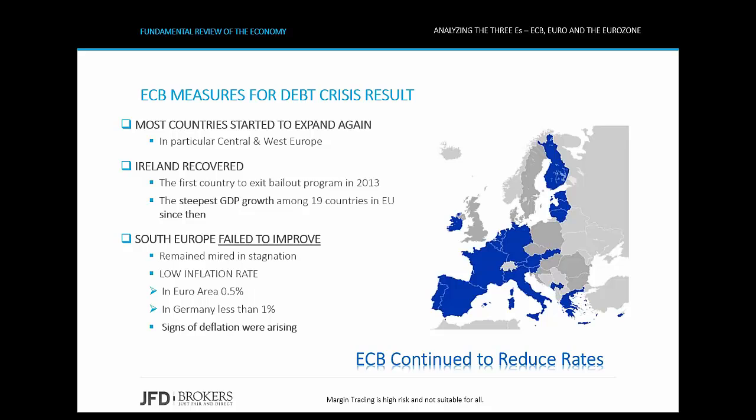The rescue plan and the easing monetary policy helped most countries of the Euro area advance again, in particular the central and western countries, as well as Ireland. Ireland recovered really fast — it was the first country to exit the Euro area bailout program in 2013, and since then Ireland has maintained the steepest GDP growth among the 19 Euro area member states. However, much of southern Europe remained mired in stagnation, and troubling signs of deflation were arising, leaving no more space for the ECB to remain inactive. The central bank continued to reduce its key interest rates to boost liquidity in the markets.